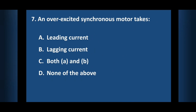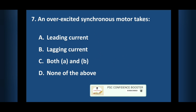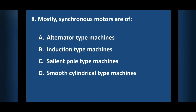Question number 7: An over-excited synchronous motor takes? Answer is option A: Leading current. Question number 8: Mostly synchronous motors are of? Answer is option C: Salient pole type machines.